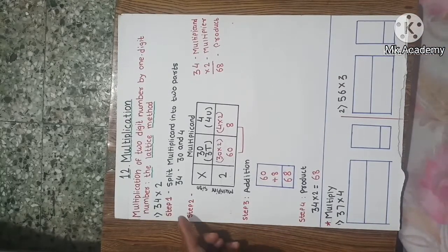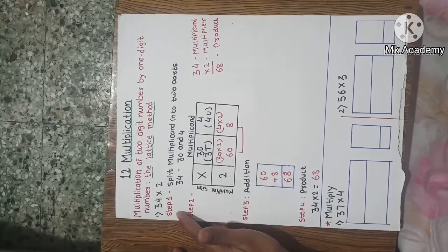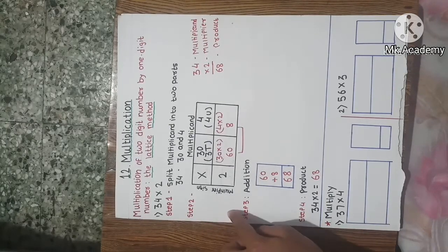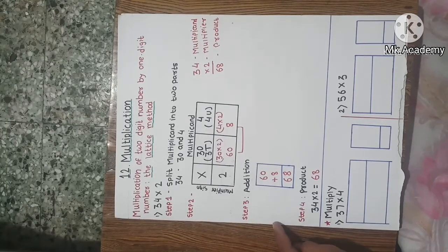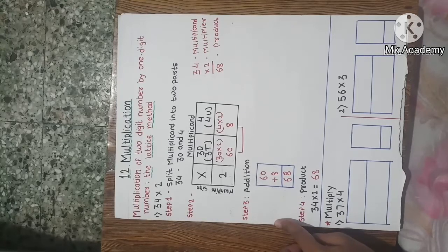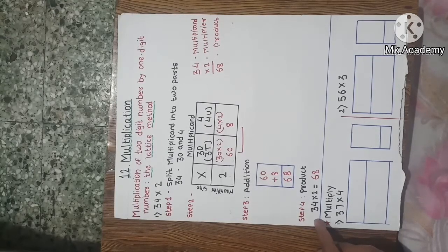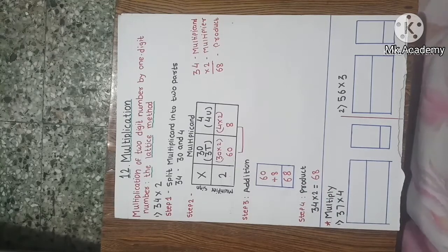We solved this example in 4 steps. In step 1 we split the multiplicand into 2 parts. In step 2 we write the numbers in the lattice method. In step 3 we do addition, and in step 4 we write down the answer. The answer is called the product.